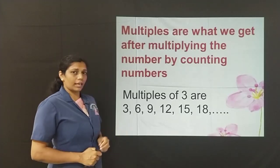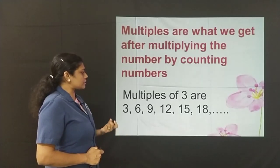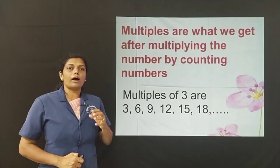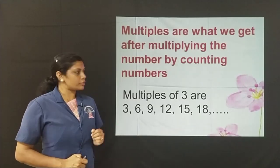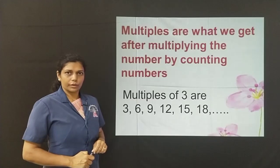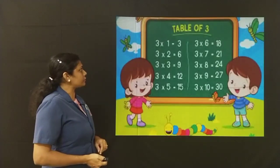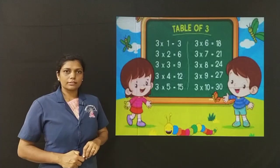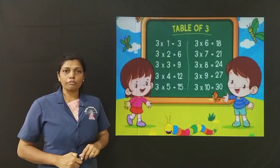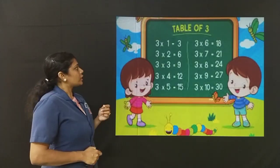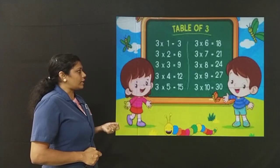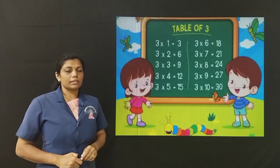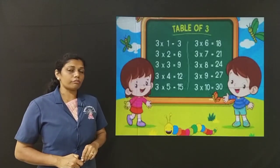So, in this case, 3, 6, 9, 12, 15 and so on are the multiples of 3. Let us continue. The table of 3: 3, 6, 9, 12 — what you write in the tables — these are nothing but the multiples of 3. Clear.